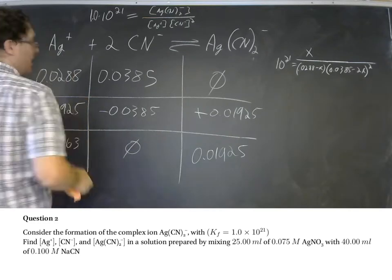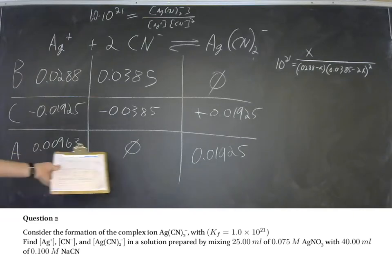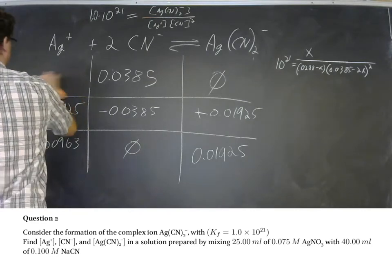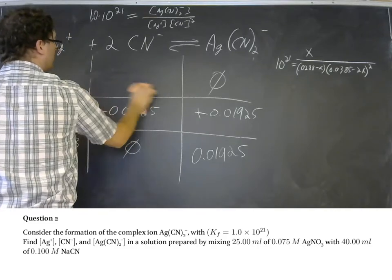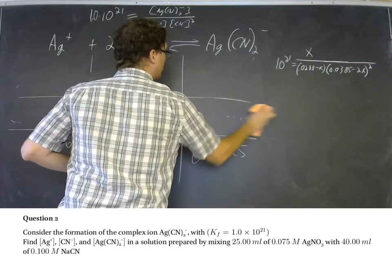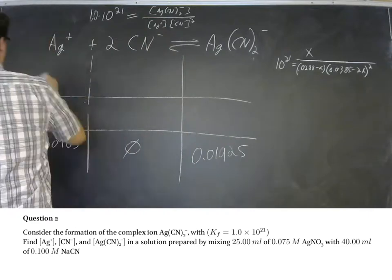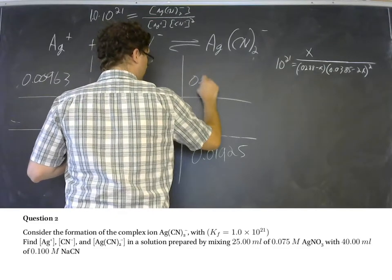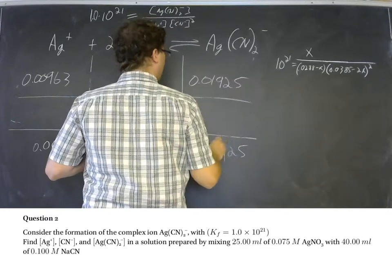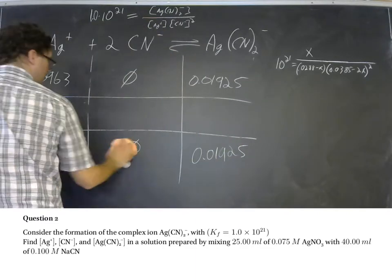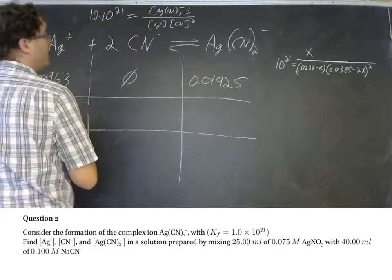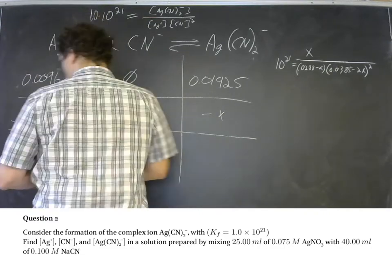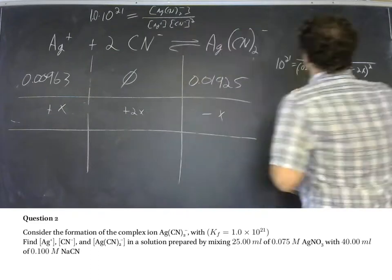It's the cyanide and so that's gonna be negative 0.0385 and we'll have half that amount, plus 0.01925, and minus 0.01925. And this is gonna give us after concentrations of 0.01925, 0, and 0.00963. Now we can take these after values and plug them in as our new initial values for an ice table.